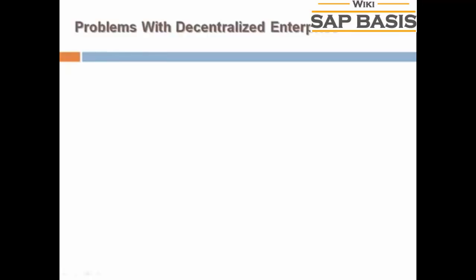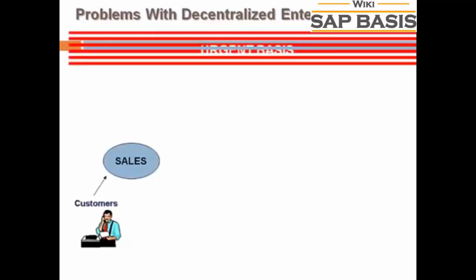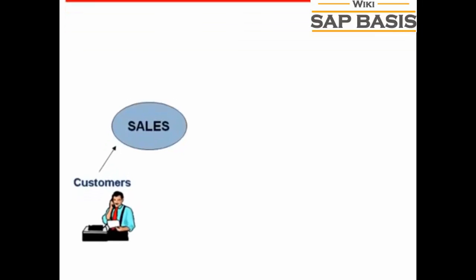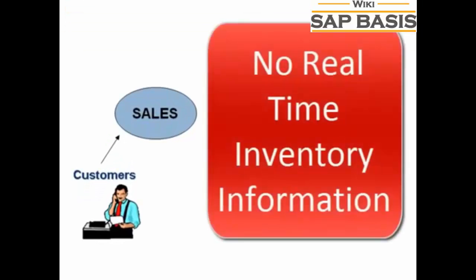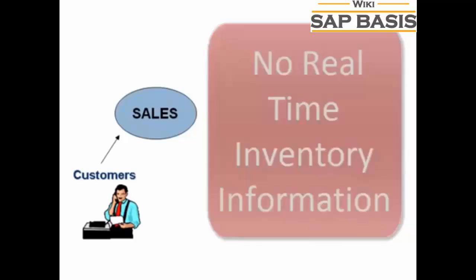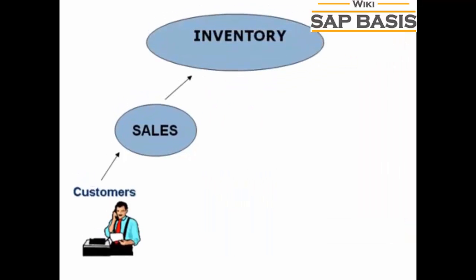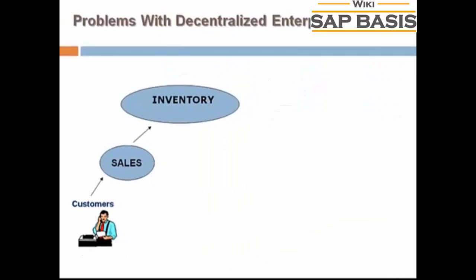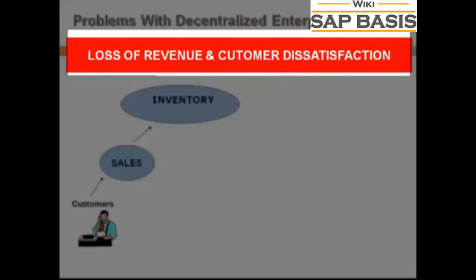To identify the problems arising from decentralized enterprise management systems, let's look at the same business process again. The customer approaches the sales team for a product, but this time he needs the product on an urgent basis. The sales team do not have real-time information access to the product's inventory, so they approach the inventory department, which takes time. The customer chooses another vendor, leading to loss of revenue and customer dissatisfaction.